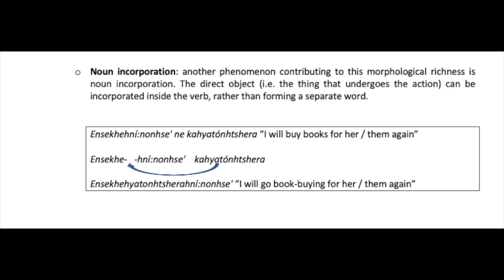The direct object — the thing that undergoes the action — can be incorporated inside the verb, rather than forming a separate word as in English. For example, from the sentence 'I will buy books for her again,' we can form a single word meaning 'I will go book buying for her again,' simply by incorporating the noun inside the verb.